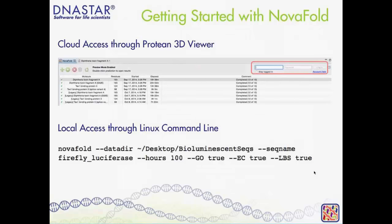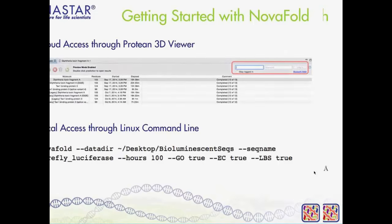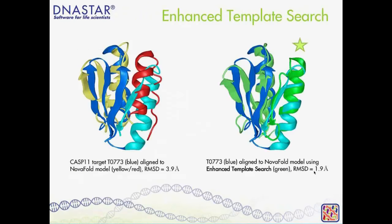The team has been focused on enhancing NovaFold's accuracy through what they call enhanced template search. On screen are two structures overlaid on a CASP 11 target structure. CASP — the Critical Assessment of Structure Prediction — is a biennial global competition, a blind study where groups from around the world bring their state-of-the-art tools to predict targets without knowing the real answer. At the end of the competition, models are compared against gold standards — the actual known structures released through the protein databank.